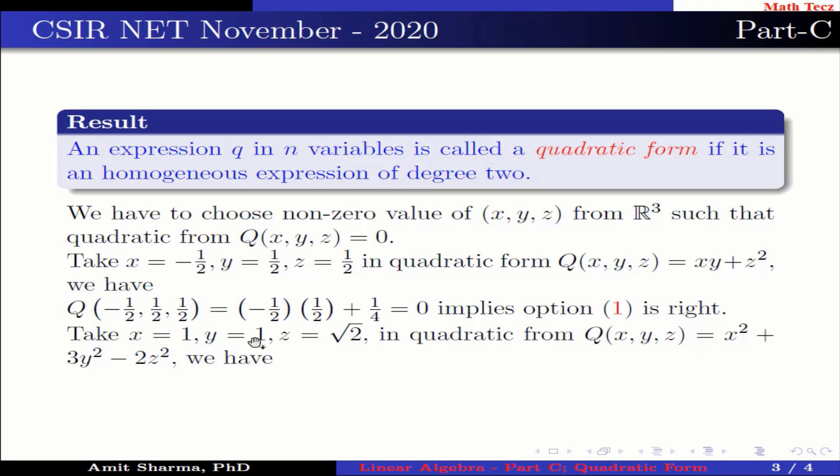Now take x = 1, y = 1, z = √2 in quadratic form Q(x,y,z) = x² + 3y² - 2z².